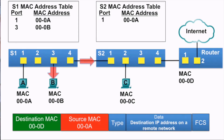PCB receives the Ethernet frame, and because the destination MAC address does not match its own MAC address, it does not accept the rest of the frame.